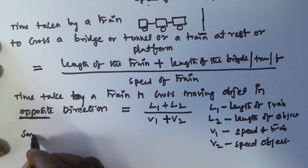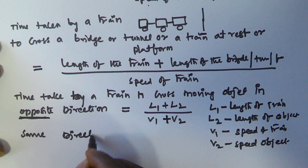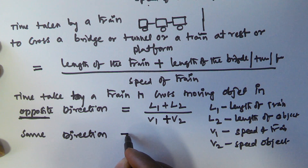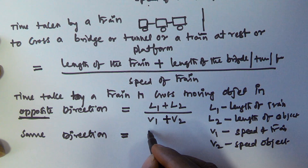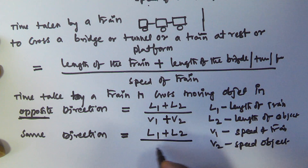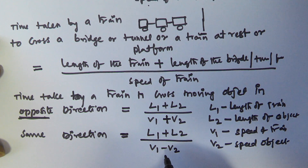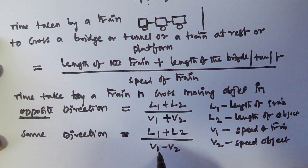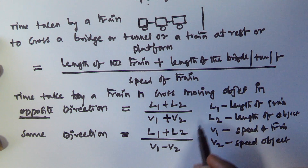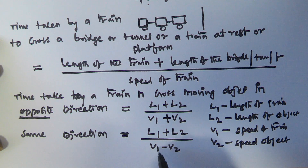If both the train and the object are moving in the same direction, the time taken to cross each other is given by L1 plus L2 divided by V1 minus V2, because when both are moving in the same direction, the relative speed is V1 minus V2. Here L1 is the length of the train, L2 is the length of the object, V1 is the speed of the train, and V2 is the speed of the object.